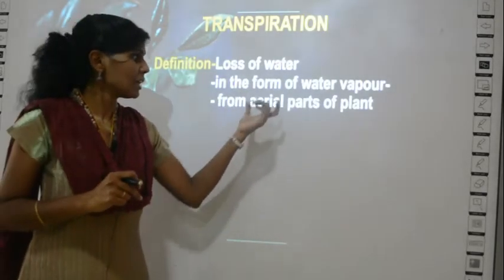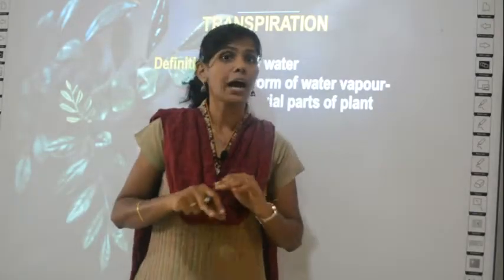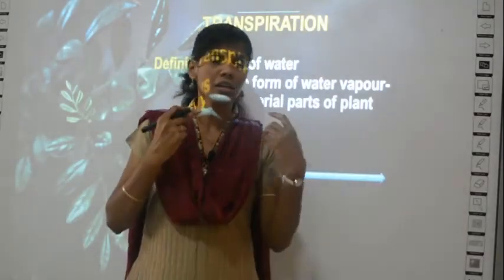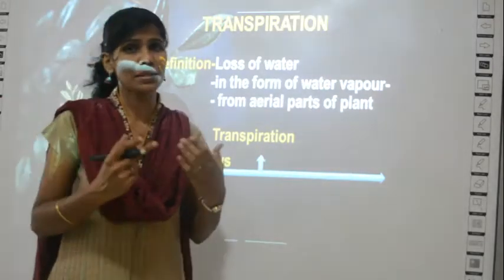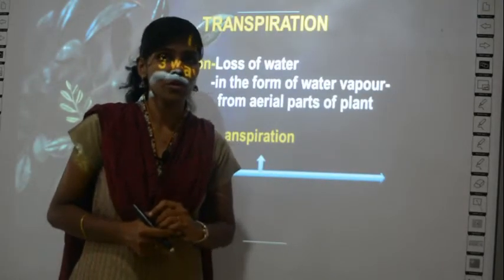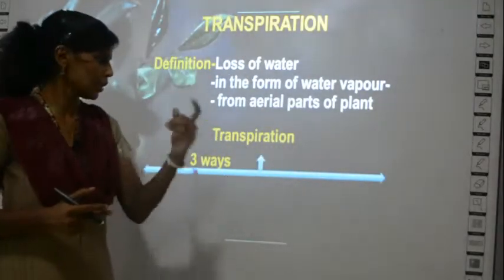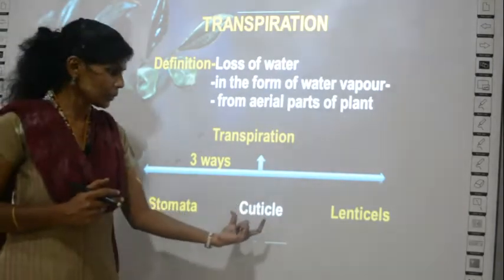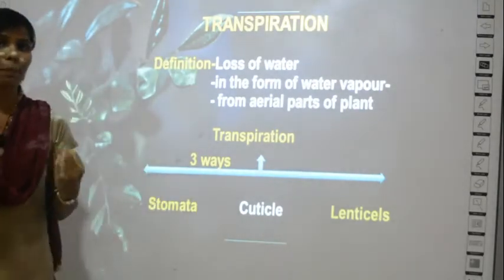Aerial parts of a plant means the portions above the ground level — everything above the soil. There are three ways transpiration can happen: through parts of the plant. The three parts are: first, stomata; second, cuticle; and third, lenticels.